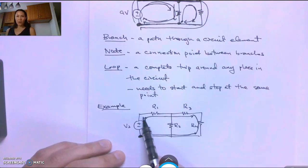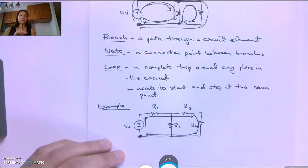So as we're walking around this outer loop, first we walk through this source. Then we walk through the resistor. We encounter this node. We walk through the third resistor, the fourth resistor, and we come back to our starting point.